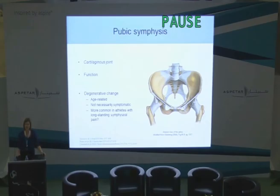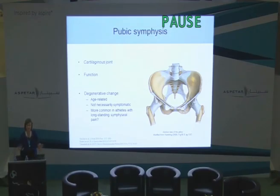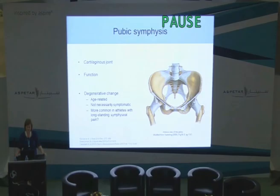I want to start a little bit with the pubic symphysis, as this is relative to the adductors. We know that this is a cartilaginous joint formed by the pubic bones and the fibrocartilaginous disc. It's really important for stabilising the anterior aspect of the pelvis and obviously important for shock absorption as well. We know that we do see degenerative changes at this joint that are usually age-related and may or may not be symptomatic. There's a suggestion that degenerative changes may be more common in athletes who have long-standing symphyseal pain.